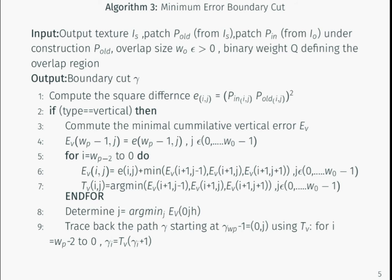To remove any noticeable edges, we find the minimum error boundary cut between the previously selected patch and the new patch. To find this optimal boundary cut, we compute two parameters. First, we find the square difference between the old and new patches. The square difference helps us find the error surface.